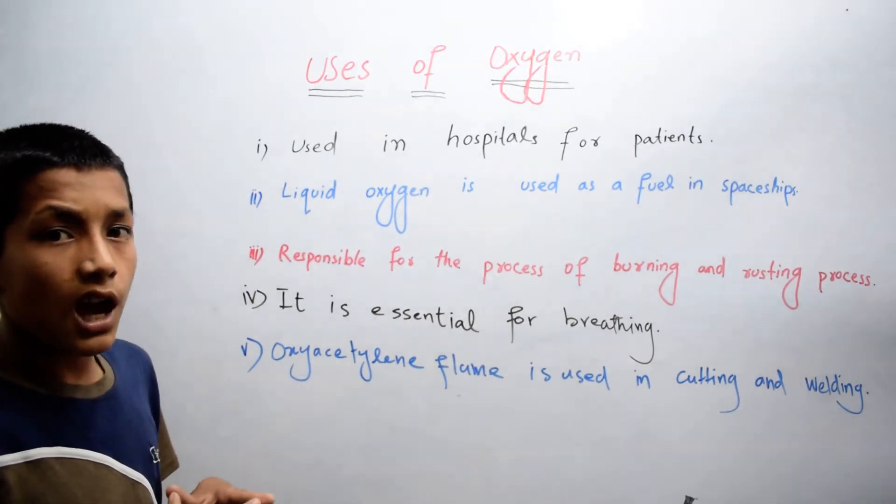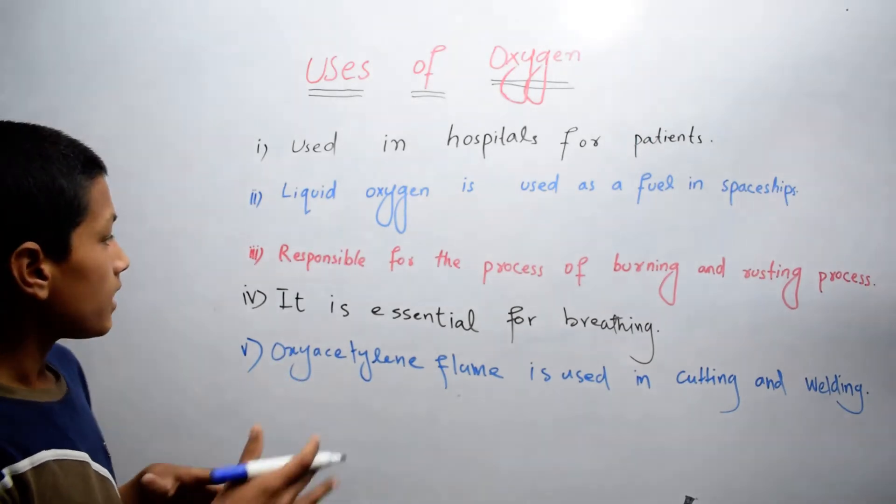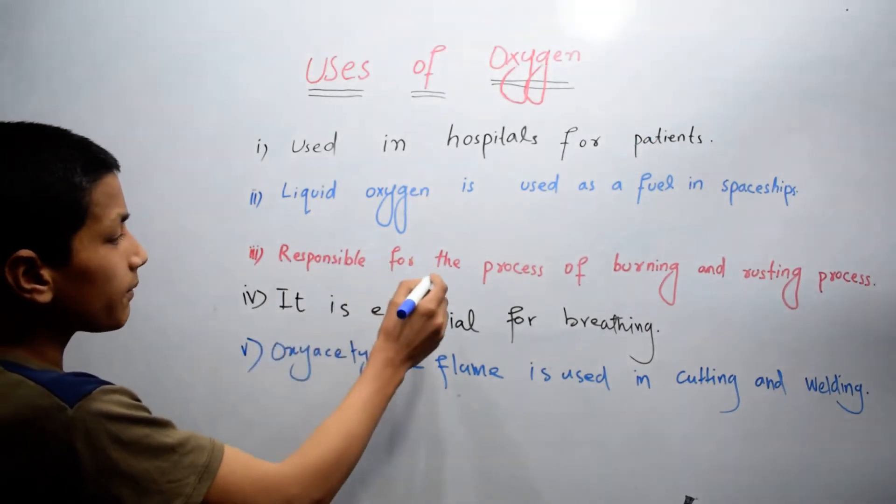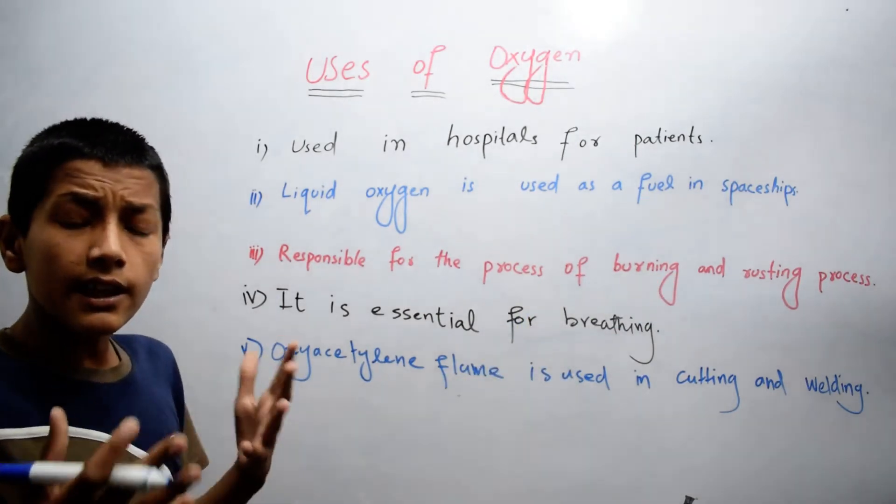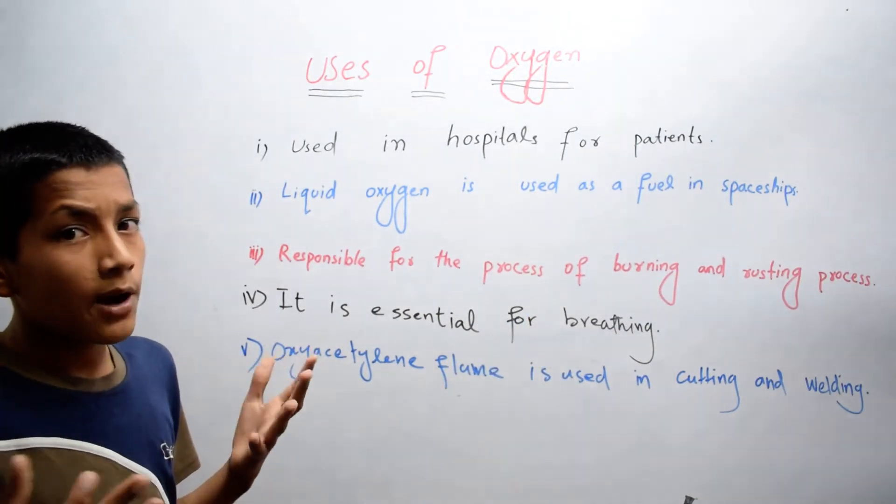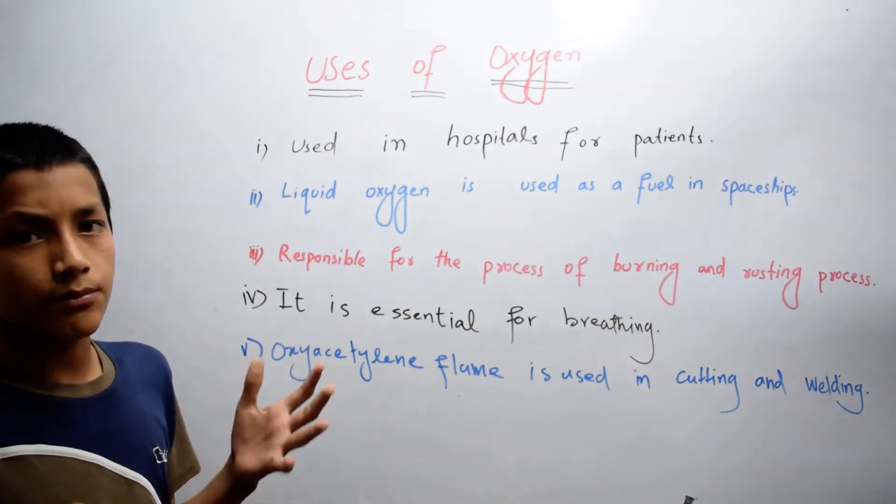The third use of oxygen is it is responsible for the process of burning and rusting.